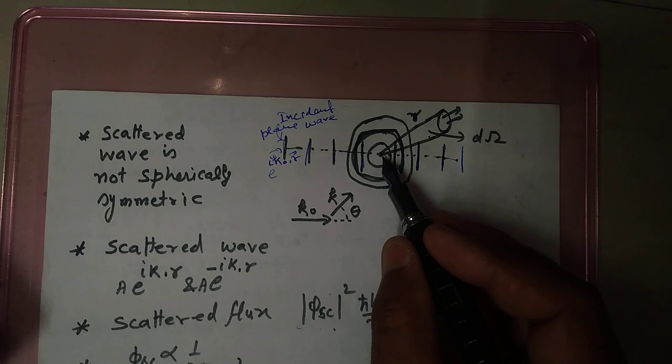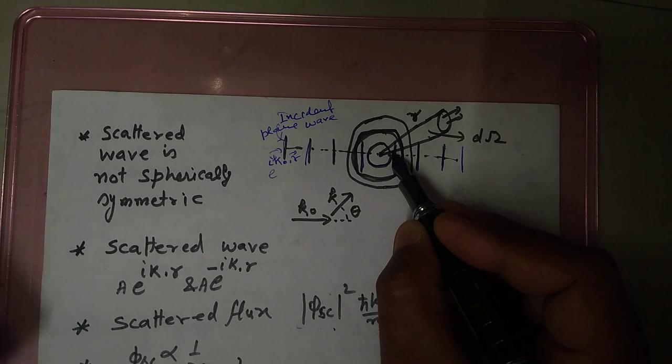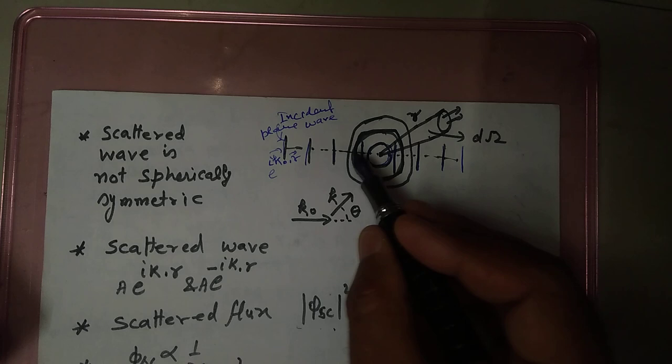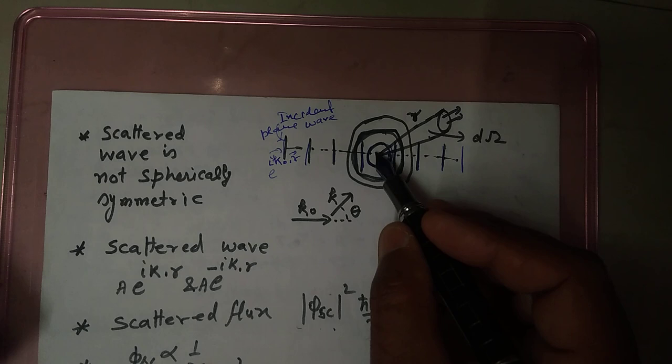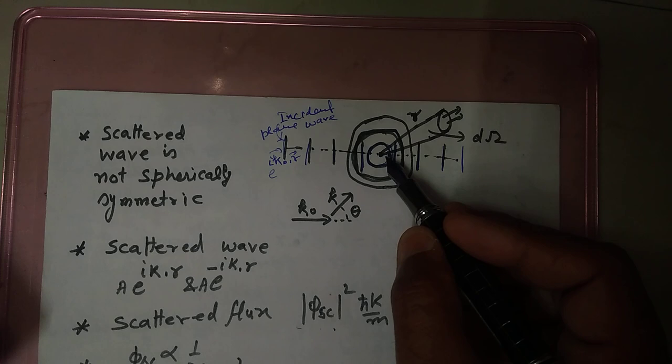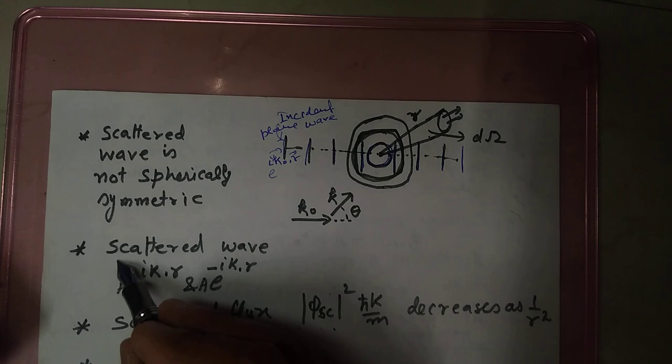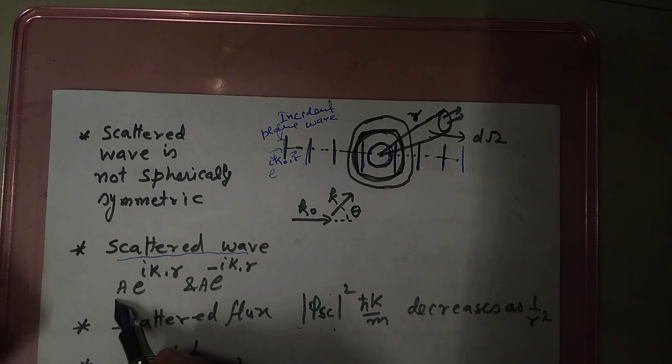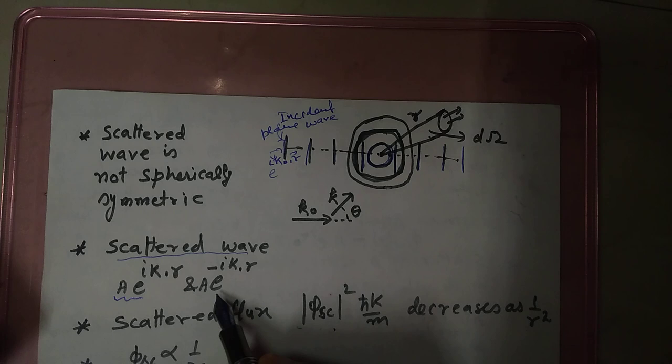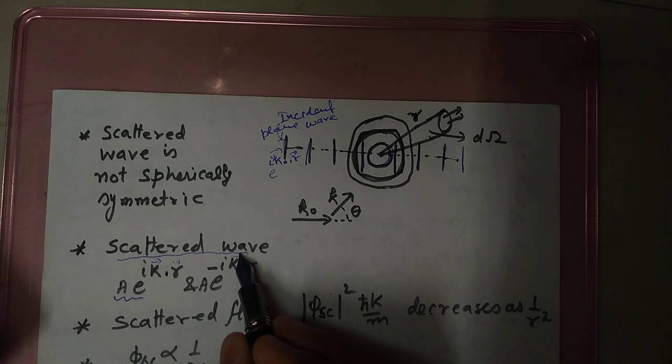When this scattered particle interacts with or collides with the target, this incident plane wave — they collide with this — we will get the scattered part. The particles will diverge out, and we can represent it with exponential e^(iK·r) and e^(-iK·r).